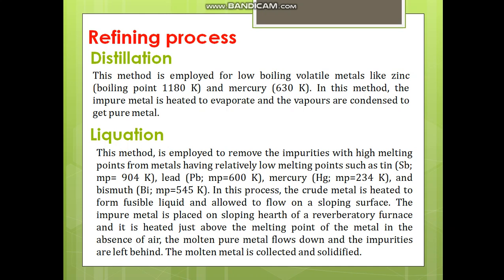The next method is liquation, used to remove impurities based on differences in melting points. For example, tin has a melting point of 904 Kelvin while lead has only 600 Kelvin. The crude metal is heated to form a fusible liquid and allowed to flow on a sloping surface. The impure metal is placed on the sloping hearth of a reverberatory furnace, heated just above the melting point of the metal in the absence of air; the molten pure metal flows down and impurities are left behind.